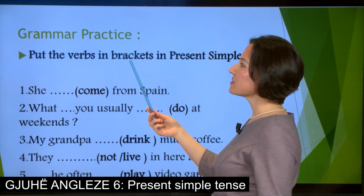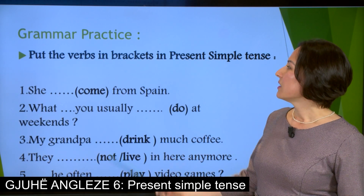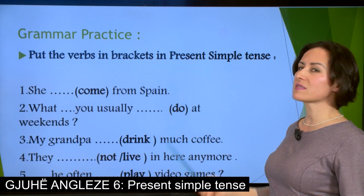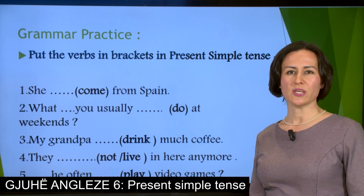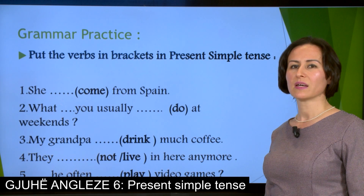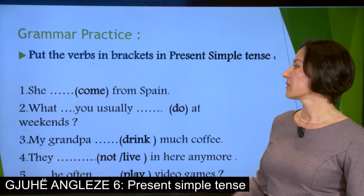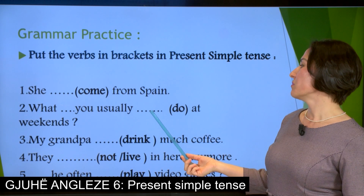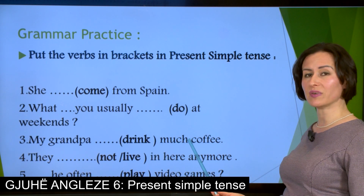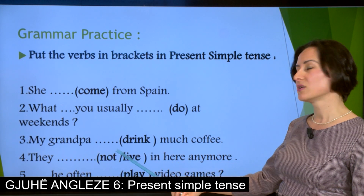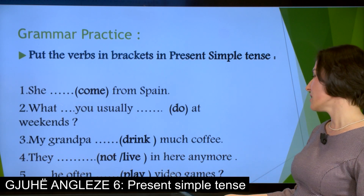We have arrived at some grammar practice. You are asked to put the verbs in brackets in the present simple tense. Please start taking notes. She ___ (come) from Spain. What ___ you usually ___ (do) at weekends? My grandpa ___ (drink) much coffee. They ___ (not live) in here anymore. ___ he often ___ (play) video games?